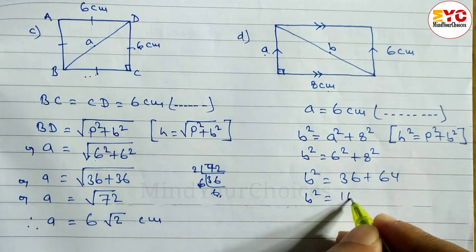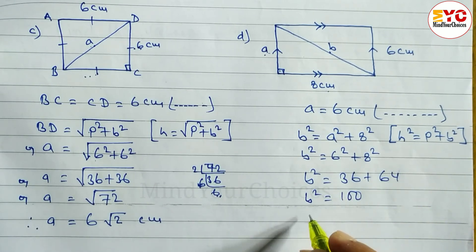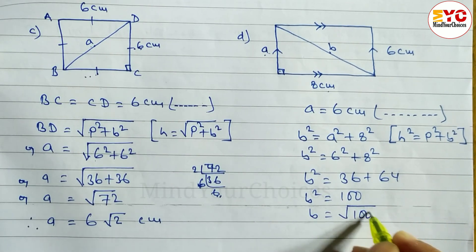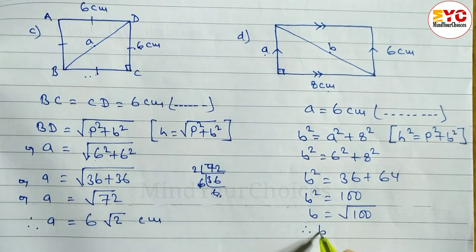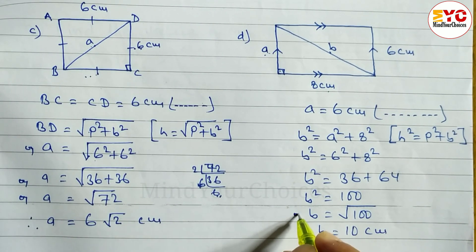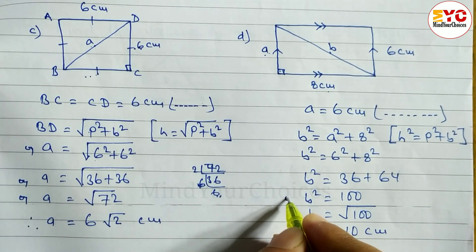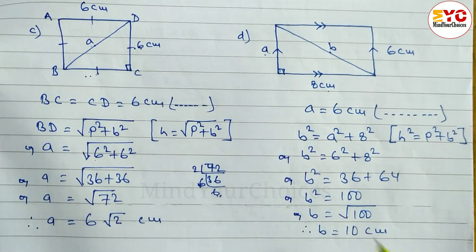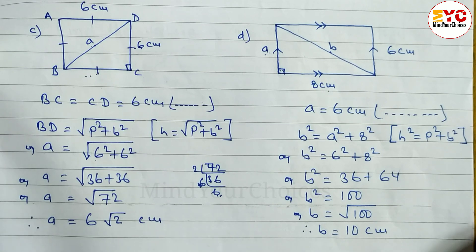So b squared is equal to 36 plus 64, which gives us 100. Therefore b is equal to root under 100, which means b is equal to 10 centimeters. The value of a is 6 and the value of b is 10 centimeters.